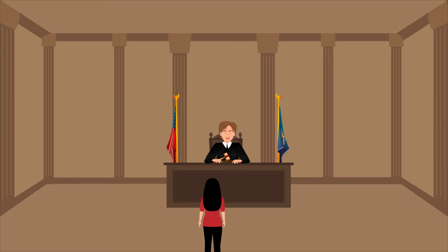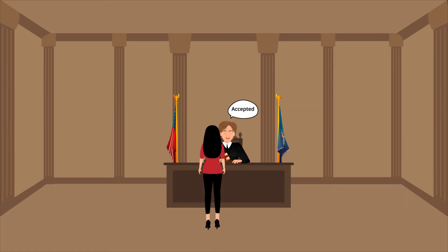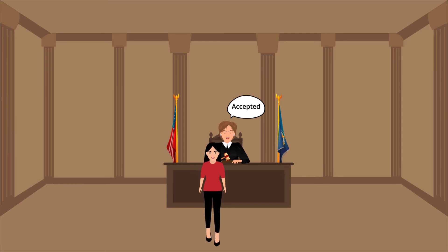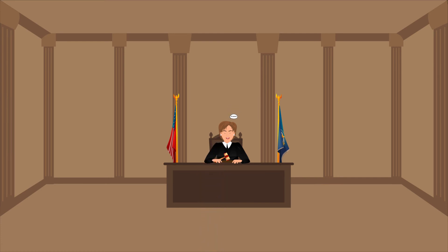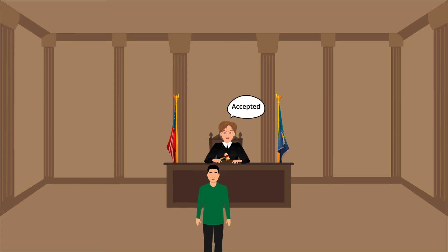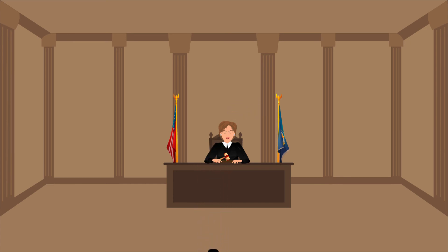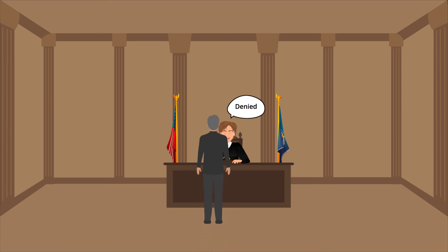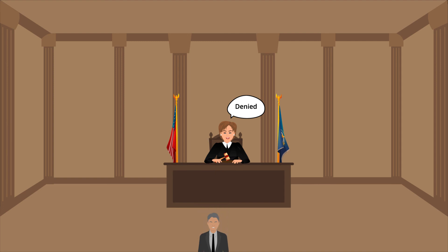The Gambler's Fallacy also occurs when judges decide on cases. Studies show a judge is more likely to deny someone asylum after issuing several previous acceptances. While this is not prediction-based, it still epitomizes the principle of The Gambler's Fallacy — after a streak of one outcome, a different outcome is seen as overdue. Each case should be considered independently, given that they're presented to the judge in a random order, but it's clear many judges let The Gambler's Fallacy negatively influence their decision-making.